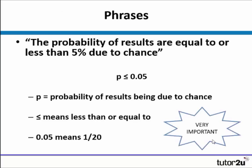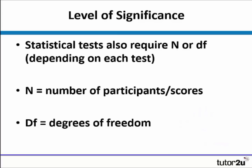Typical phrases we would see are shown here on the screen. This symbol simply means the probability of our results is equal to or less than 5% due to chance — with P representing probability, the symbol meaning less than or equal to, and 0.05 meaning 1 in 20. This is very important as this appears in all of your critical values tables. The level of significance also requires certain things such as the number of participants or the degrees of freedom, which you'll use to correctly interpret the critical values table.